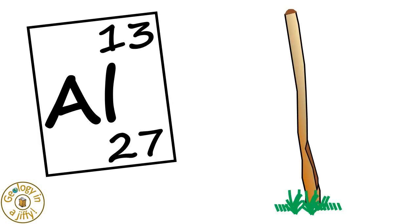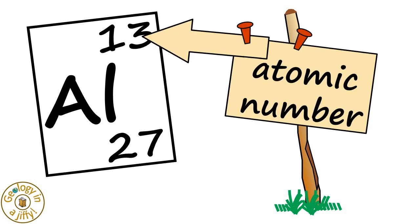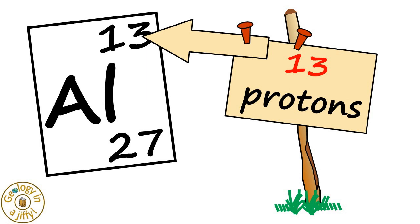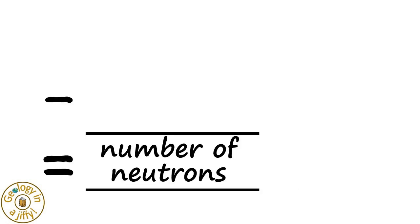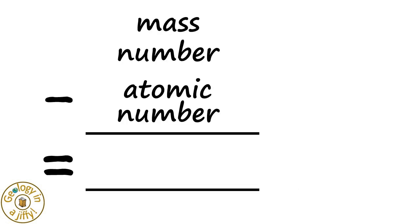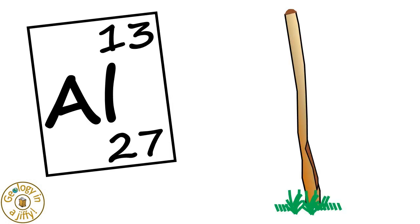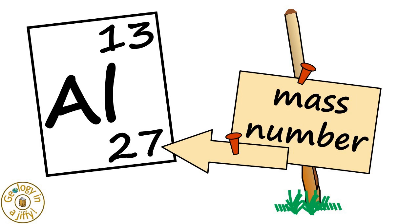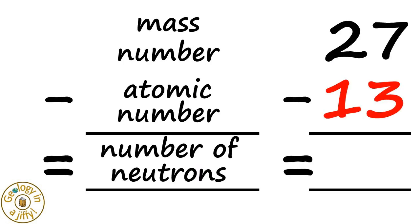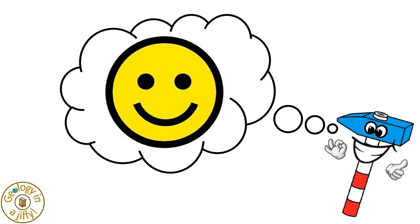So using our example of aluminium, we know the symbol is AL, the atomic number is 13, and so the number of protons in the nucleus is 13. The number of neutrons is calculated by knowing the mass number, then subtracting the atomic number, to give us the number of neutrons in the nucleus. So for aluminium, the mass number of 27, subtracting the atomic number of 13, gives us 14 neutrons in the nucleus. That's amazing! Isn't this easy?